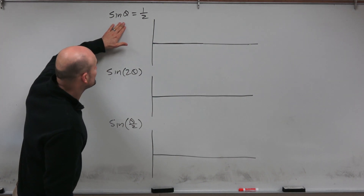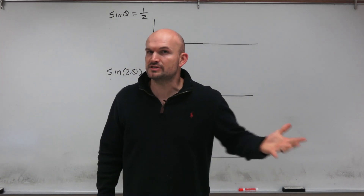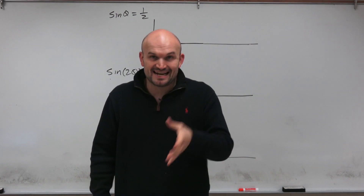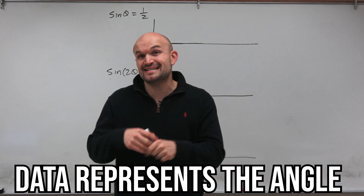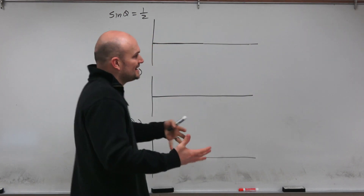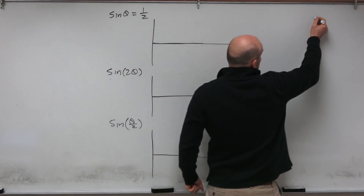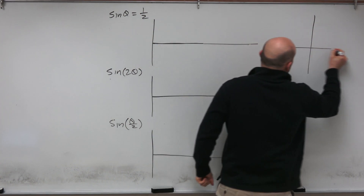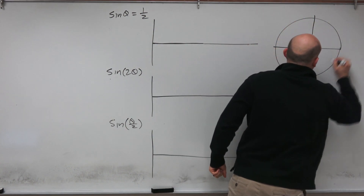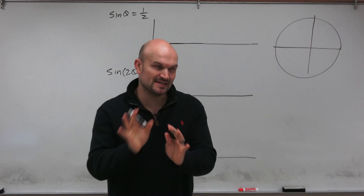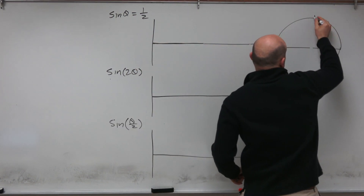The first example we're going to look at is the sine of theta is equal to one half. It's important to understand what we're trying to solve — we're trying to say the sine of theta is equal to one half. Theta represents the angle, so it's the sine of what angle is equal to one half. If we look at the unit circle, we recognize there are infinitely many of these answers, so that's why a lot of times we like to deal with the interval of zero to two pi to keep things simple.